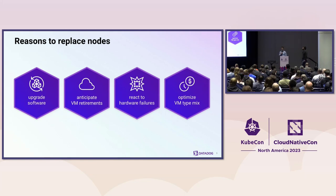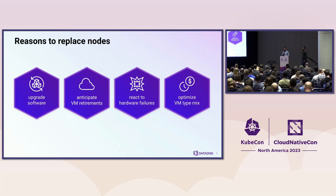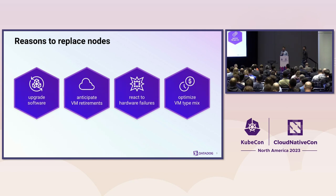There are many reasons to replace nodes. When we started running Kubernetes, we needed a solution to quickly react to hardware failures like bad memory and failing disks. At our scale, that's not rare, and while they don't necessarily break nodes completely, they have a negative impact on performance. We also wanted to anticipate VM retirements, when the cloud provider reclaims your virtual machines. But these days, the main use case by far is to upgrade machine images — for Kubernetes upgrades and OS security patches.